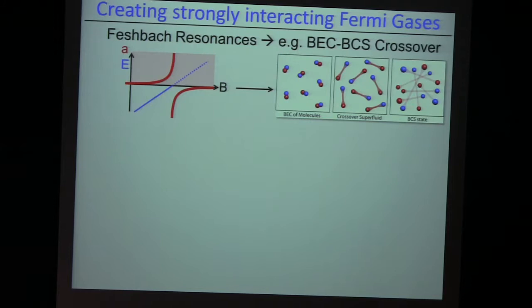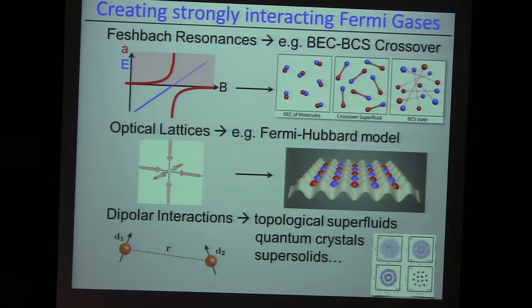So this sets the stage. There are three experiments in my group, and we are trying to investigate all three ways of inducing strong interactions. The first one uses Feshbach resonances, the second is the Hubbard model using optical lattices, and the third is dipolar interactions.